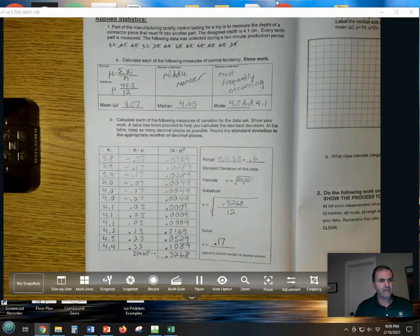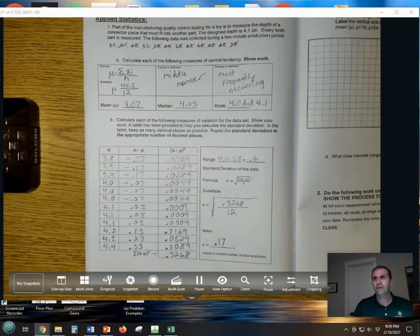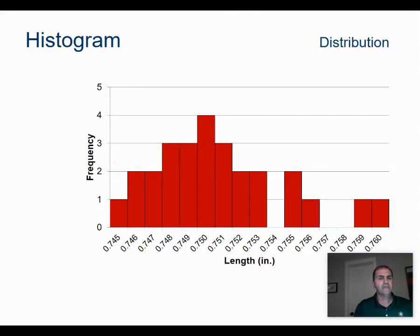Now we're going to display this data in a histogram. A histogram is a visual representation of your data. This is the example we talked about in class with measuring a wood cube that's supposed to be three-fourths of an inch. These are the measurements that we got, ranging from 0.745 to 0.760, and the number of times each one of those occurred.